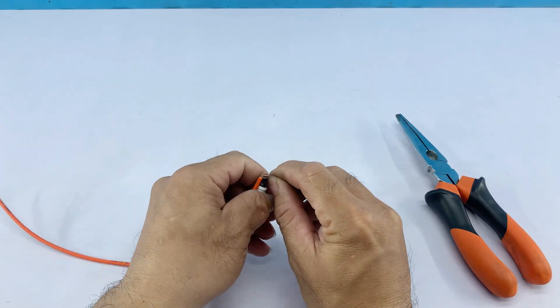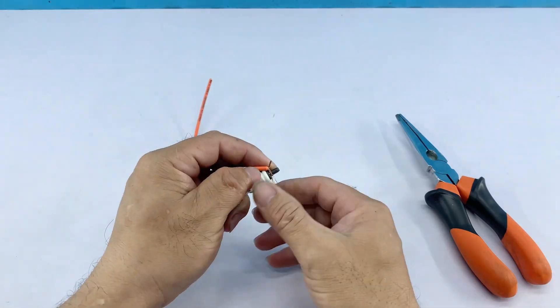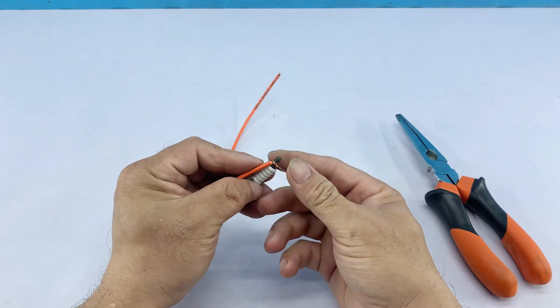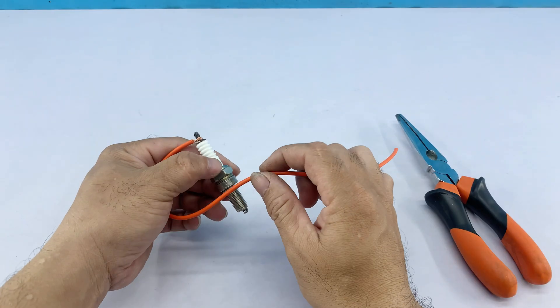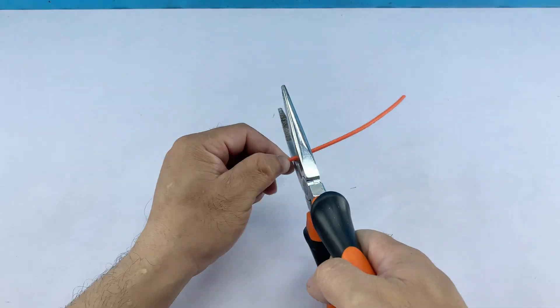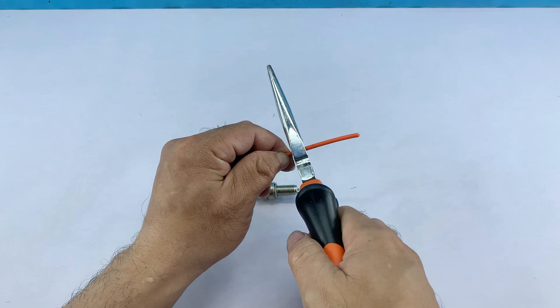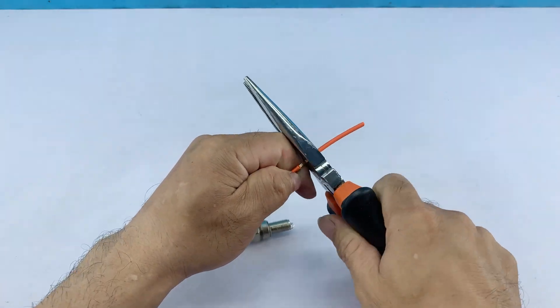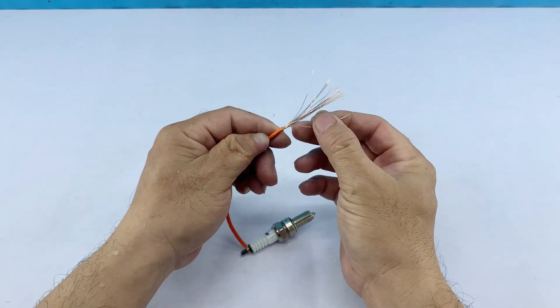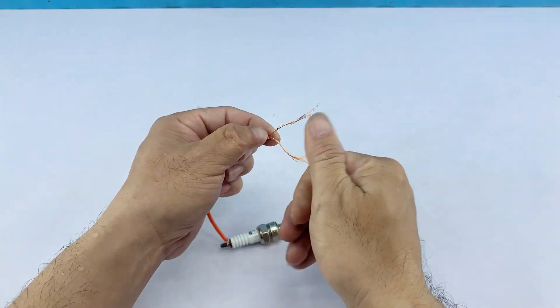I'm wrapping the stripped end of the orange wire tightly around the spark plug's terminal. This ensures good electrical contact. I'm securing this connection, making sure there are no loose ends that could interfere with the circuit. Once the wire is wrapped, I'm stripping the remaining end.